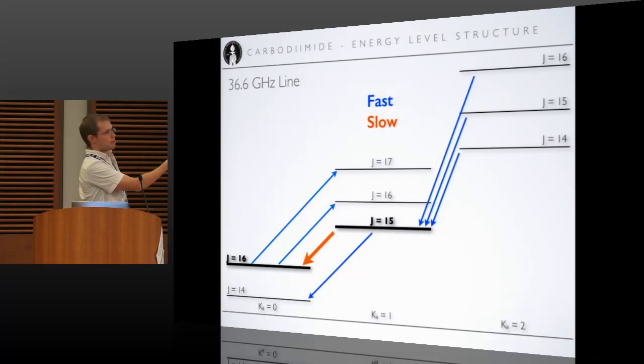So that means you can't build up any population up here, because while it's waiting to undergo this, it says screw that, I'm going to go down here instead. And it just piles down really fast. So we won't see any enhancement in the masing emission there. So that line shouldn't be any brighter than it would normally be.